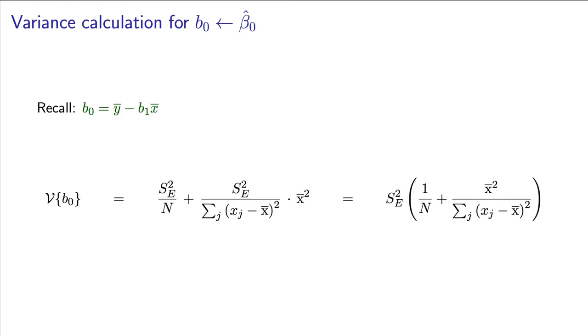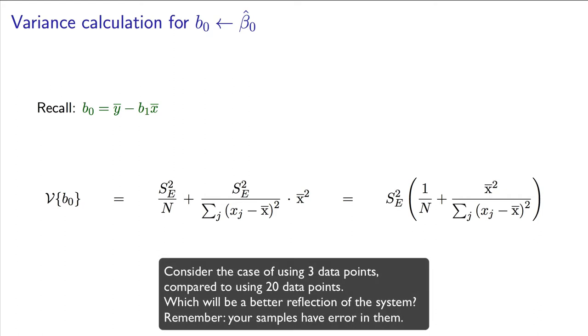That again makes intuitive sense. You would not use a small number of data points and expect a great least squares model. The more data points you take, the more stable, or the less variable, your least squares model will be.